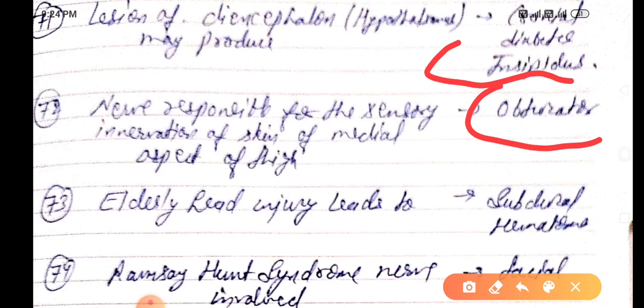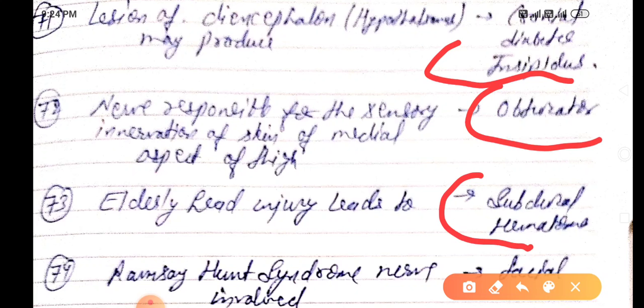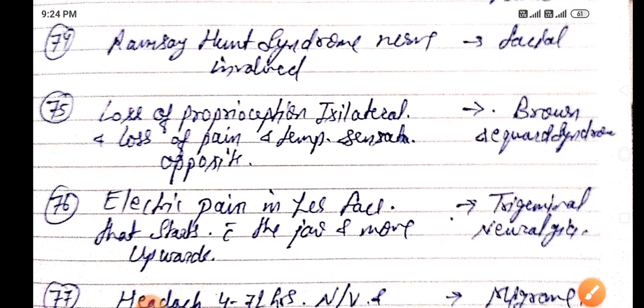In elderly head injury leads to subdural hematoma. Ramsey Hunt syndrome, nerve involved is facial nerve, seventh cranial nerve.